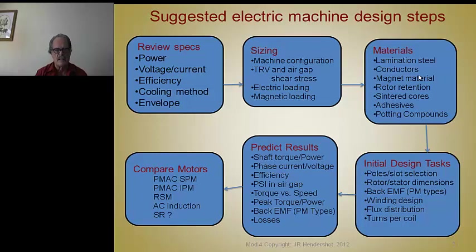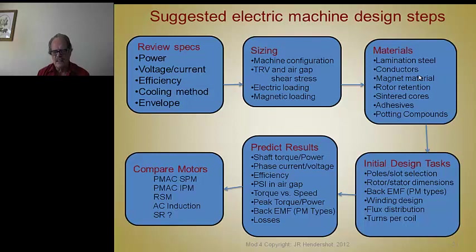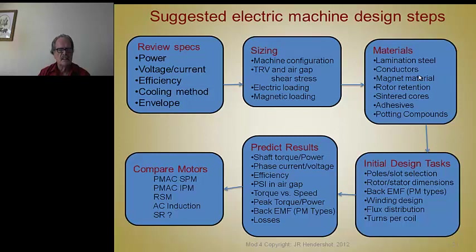The most important thing — and I should have capitalized this — is to size the machine. The sizing is somewhat related to the type of machine, but the principles of sizing are the same. This is done by some longstanding practices: the configuration of the machine — radial gap, axial flux, radial flux, transverse — and how it's packaged and mounted. We base this on tried-and-true known sets of data on the torque per rotor volume, the air gap shear stress, and standards on electric loading, current densities, and magnetic loading. The next step is to pick the materials required for this machine design.